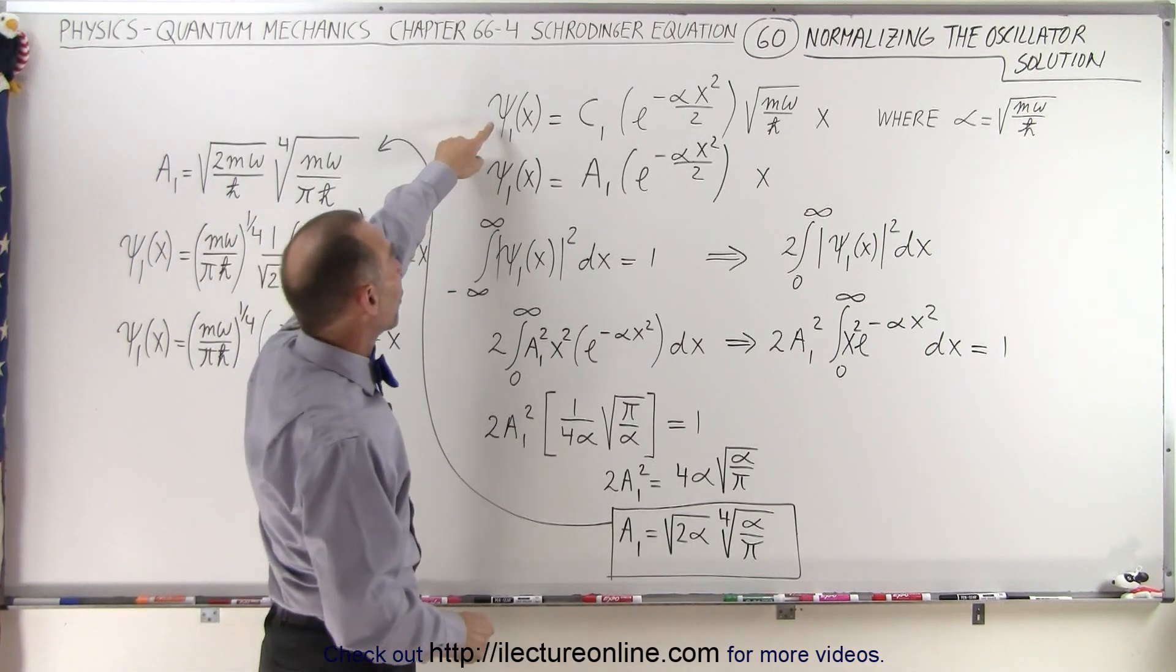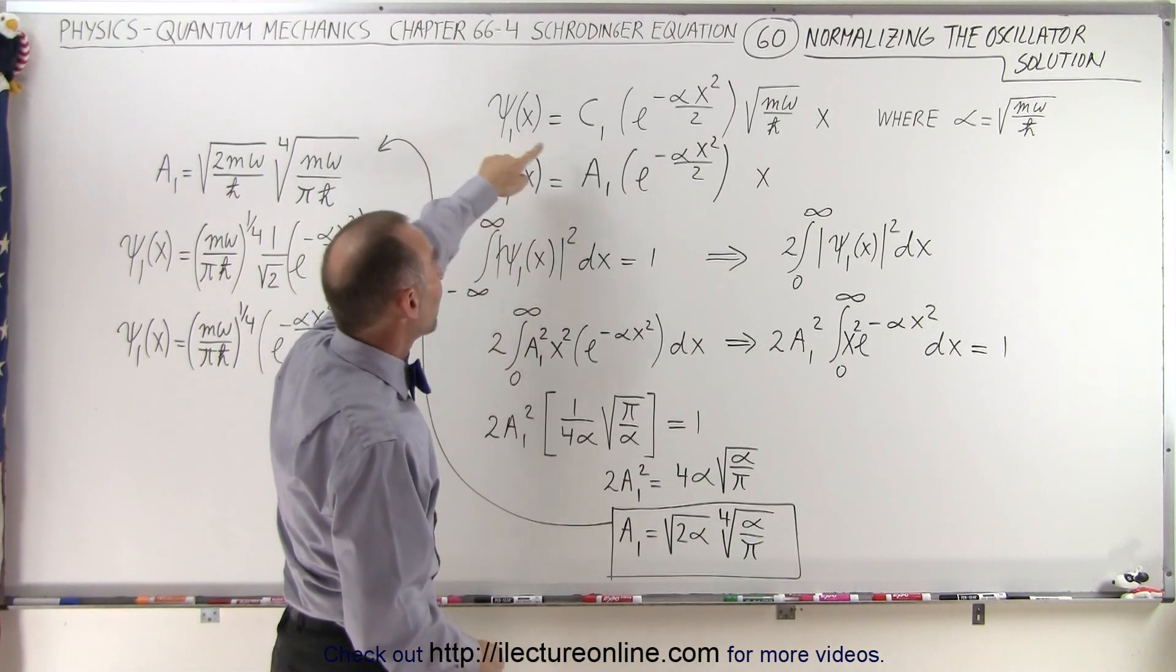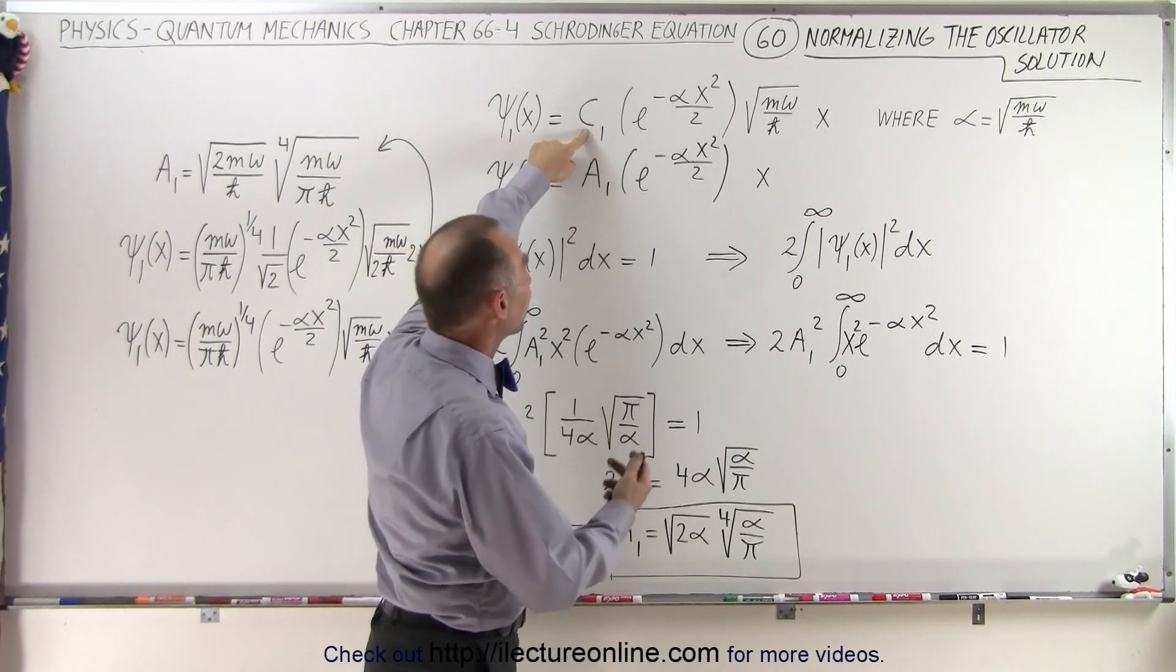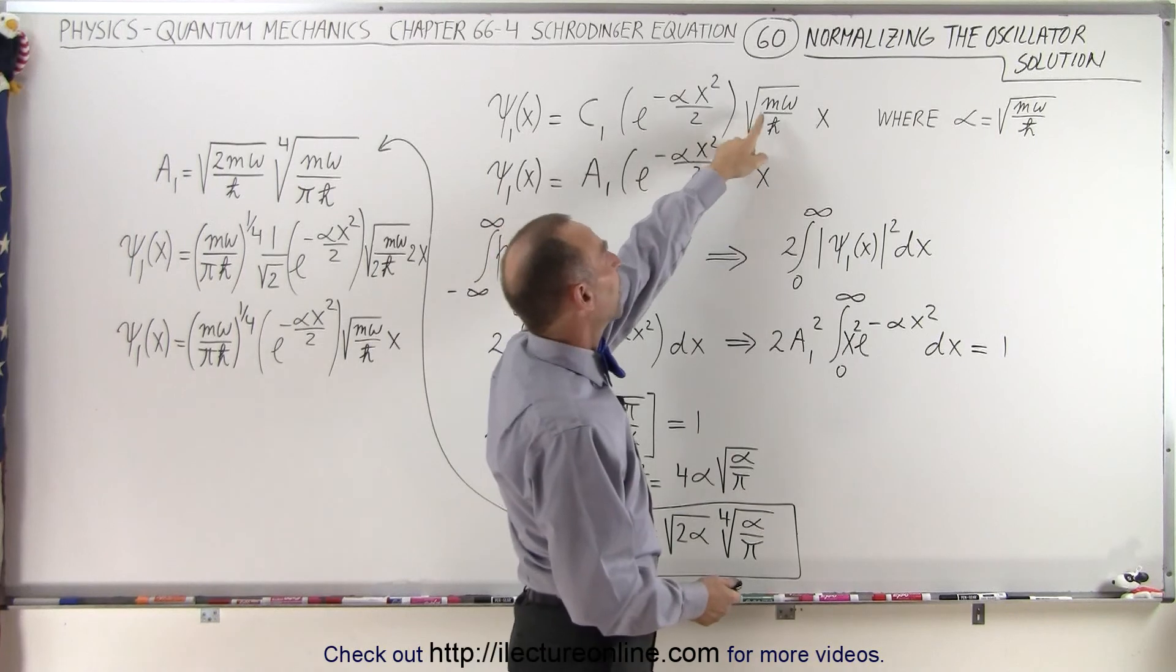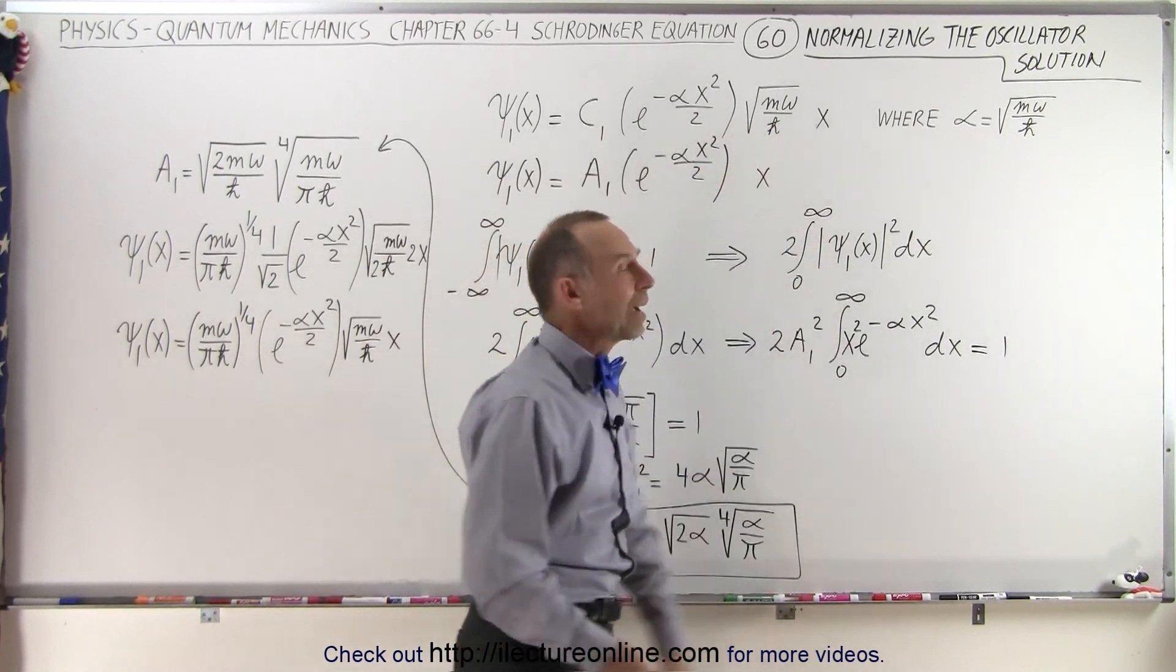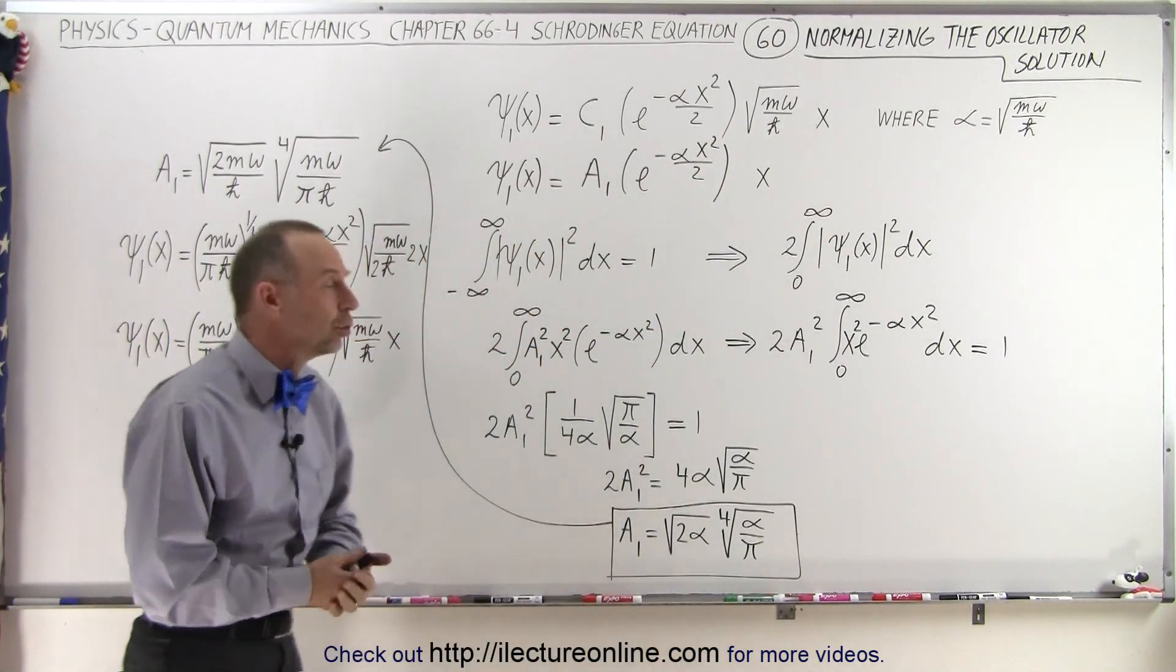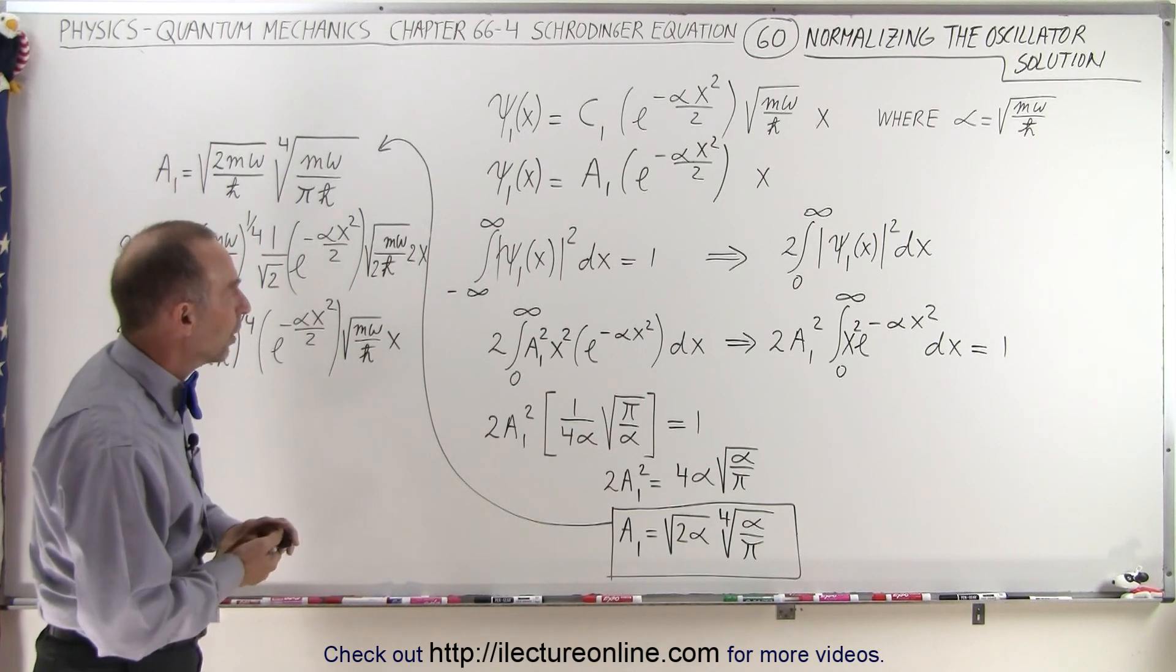So here we have the equation for quantum state n equals 1. We have a constant c1 that we're trying to find, e to the minus alpha x squared over 2, and the square root of m omega over h bar times x. So that's a general solution to the quantum state n equals 1.